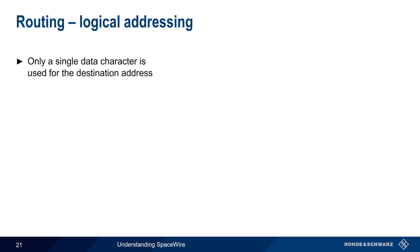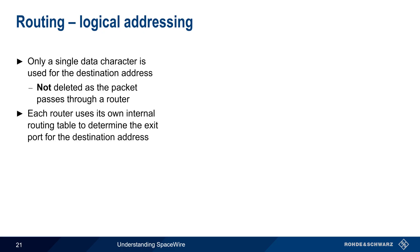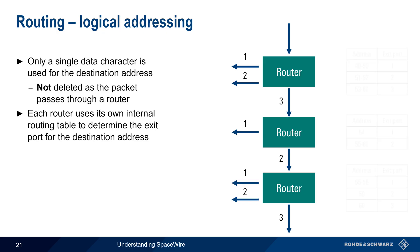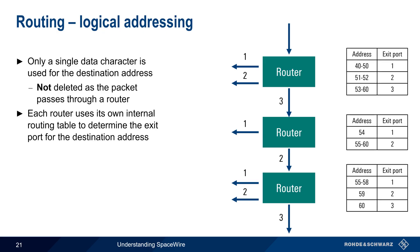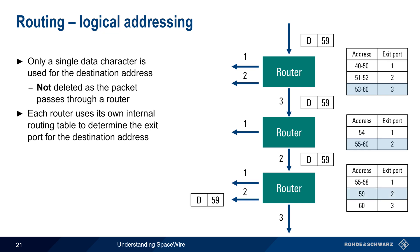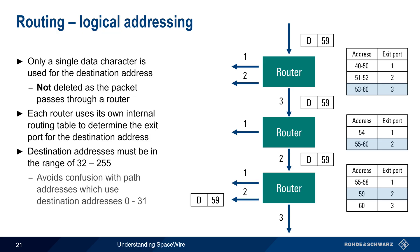In logical addressing, only a single data character is used for the destination address, and this address is not deleted as the packet passes through a router. Each router has its own internal routing table that it uses to determine the exit port for a given destination address. Note that in the case of logical addressing, destination addresses must be in the range of 32 to 255. This avoids any ambiguity with path addressing, in which destination addresses are always in the range of 0 to 31.